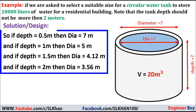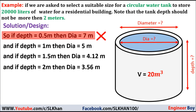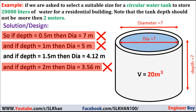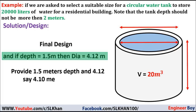Analyzing each trial: in trial one, the depth is much less relative to the diameter, which is not ideal. In trial two, 1 meter depth and 5 meter diameter makes some sense, but the depth still feels insufficient. Trial three — depth of 1.5 meters and diameter of 4.12 meters — offers a suitable balance of depth and diameter, which I prefer.